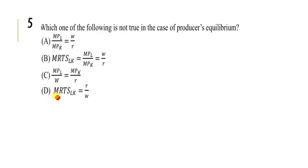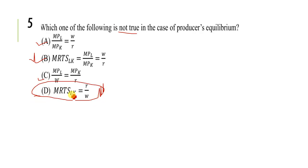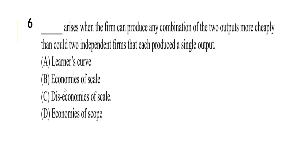Next question: which of the following is not true in the case of a producer? Option D is the not-true statement, so D is the correct option. Next: what arises when a firm can produce any combination of two outputs more cheaply than could two independent firms each producing a single output? That is economies of scope. So D is the correct option.